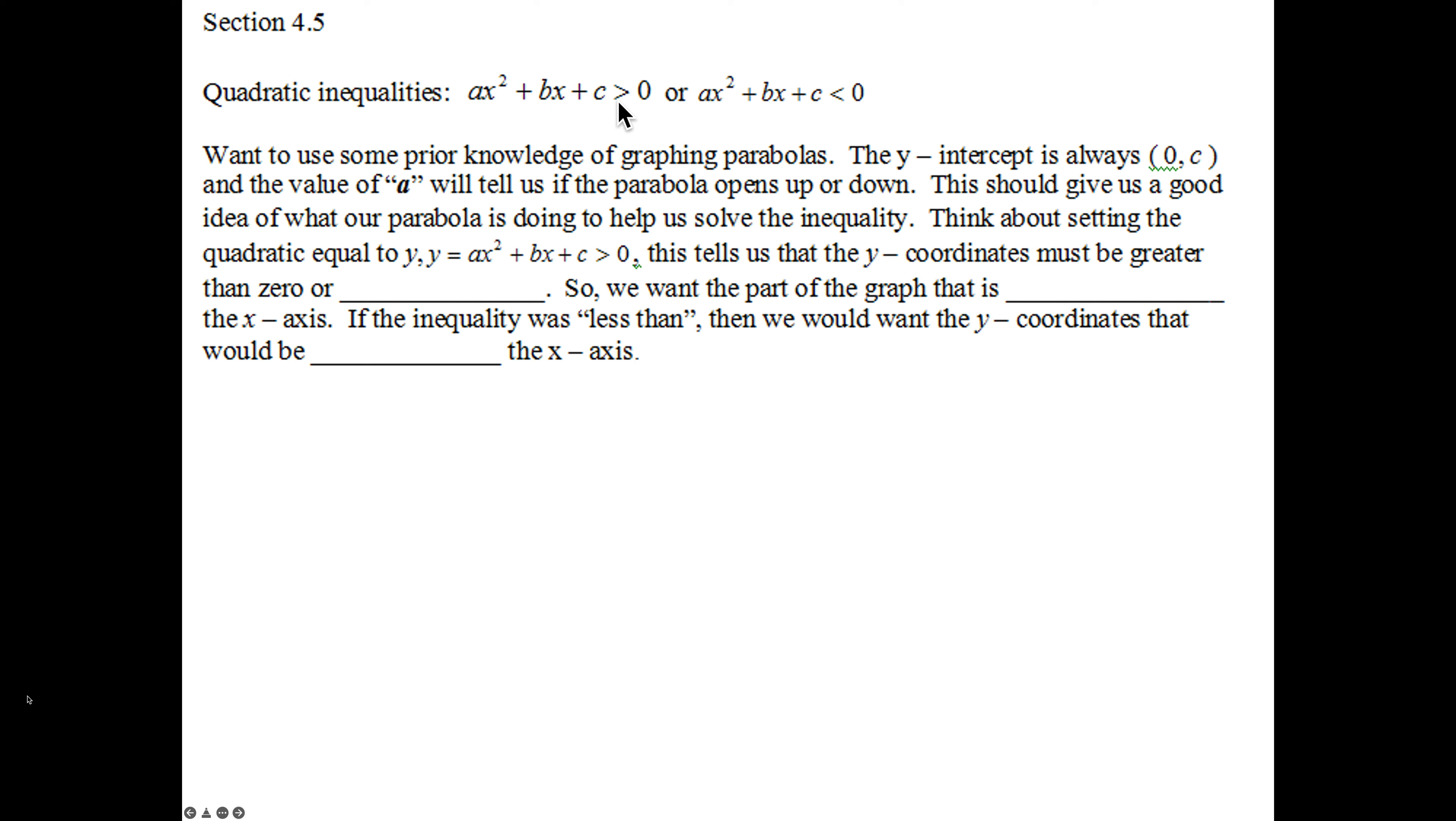So when you have a quadratic inequality greater than zero or one that's less than zero, we're going to use prior knowledge of our graphing. We know that the y-intercept is always at 0c. We know that a tells us if the parabola opens up or down, and this should give us a good idea of what the parabola is going to do to help us solve our inequality. Think about setting your equation equal to y. So we'll say y equals ax² plus bx plus c greater than zero. So this tells us that we want y-coordinates that must be greater than zero or positive y's. So we want the part of the graph that is above the x-axis, and if the inequality was less than, then everything gets switched around. Then we want the y-coordinates that would be below the x-axis because we're looking for negative y's. So we're going to use pictures here to help us solve our inequalities.